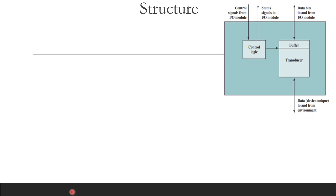Next is the structure of external devices. Every external device has a common core concept. There is a control logic — this is similar to the instructions that we control in the CPU. Control signals are handled by the control logic. There is also a buffer and a transducer.